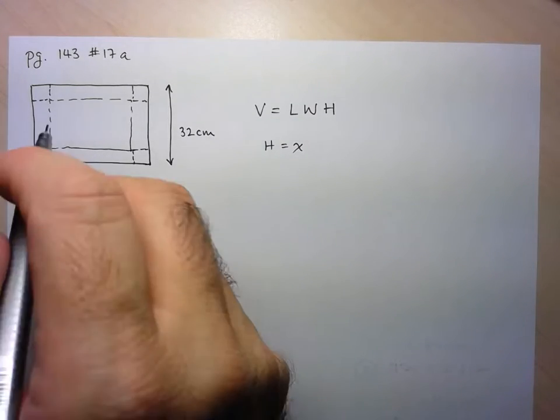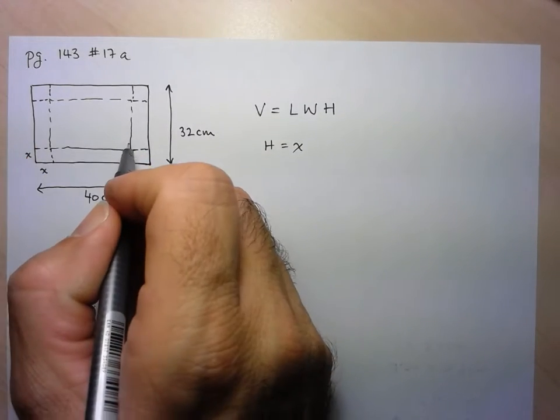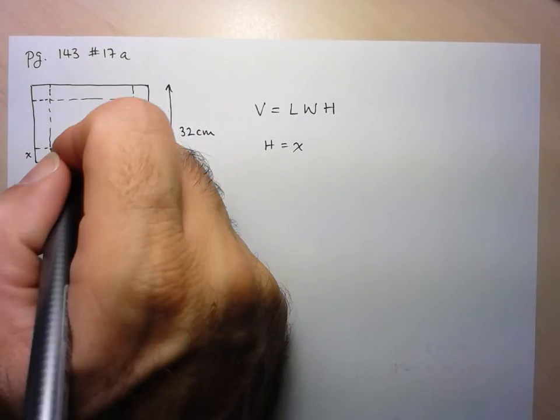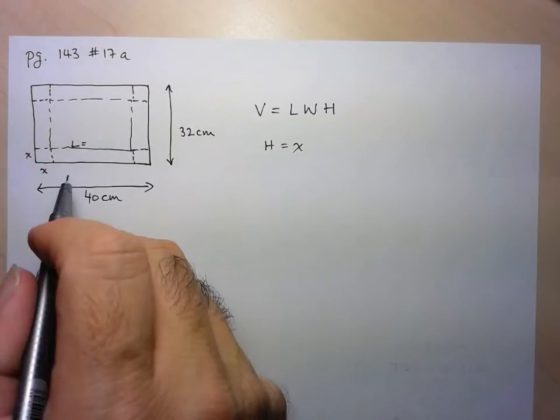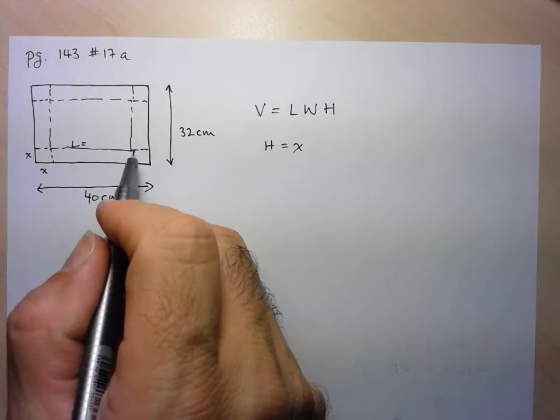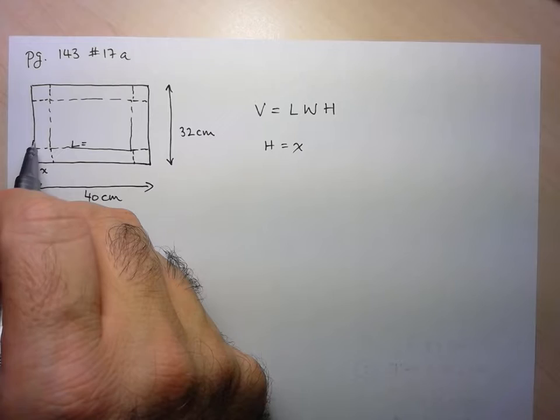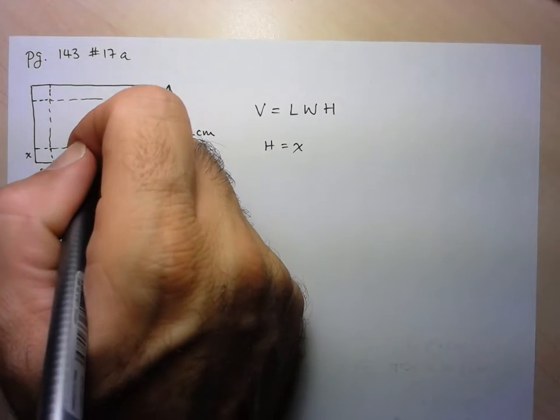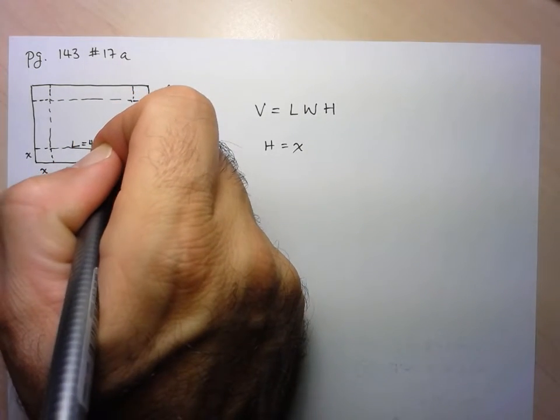So now, this we said was going to be the base of our box, so we've got the length. And let's see if we can figure out the length, and we realize, well, the whole length of this cardboard is 40, and what I'm doing is I'm lifting up X on each side. So what I'm left with is 40 minus 2X.